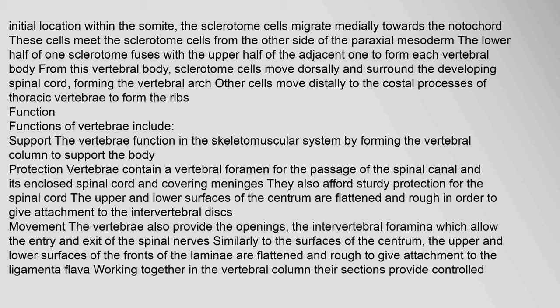From their initial location within the somite, the sclerotome cells migrate medially towards the notochord. These cells meet the sclerotome cells from the other side of the paraxial mesoderm. The lower half of one sclerotome fuses with the upper half of the adjacent one to form each vertebral body. From this vertebral body, sclerotome cells move dorsally and surround the developing spinal cord, forming the vertebral arch. Other cells move distally to the costal processes of thoracic vertebrae to form the ribs.